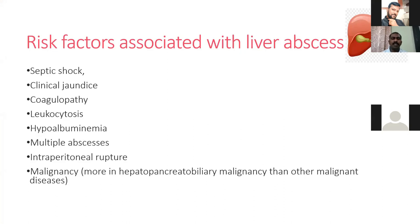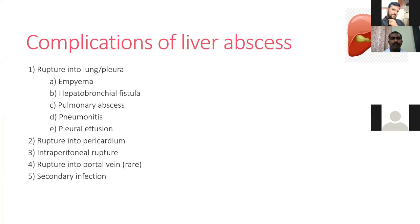Risk factors associated with liver abscess include: septic shock, clinical jaundice, coagulopathy, leukocytosis, hypoalbuminemia, multiple liver abscesses, intraperitoneal rupture, and malignancy. Complications of liver abscess include: rupture into the lung causing empyema, hepatobronchial fistula, pulmonary abscess, pleuritis, or pleural effusion; rupture into the pericardium; intraperitoneal rupture; and rupture into the portal vein or secondary infection.